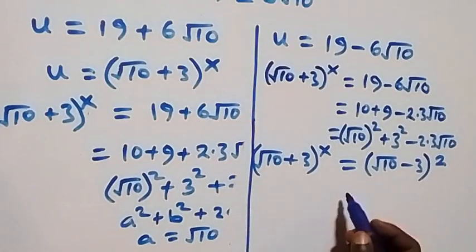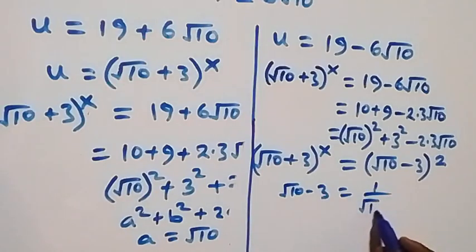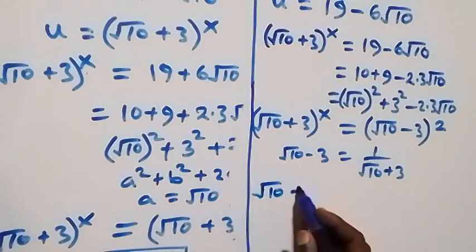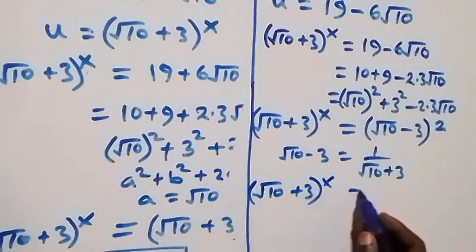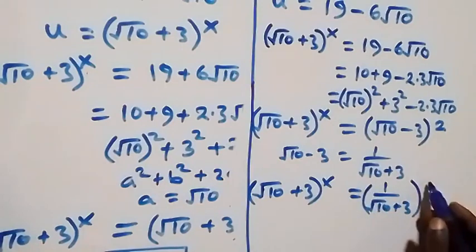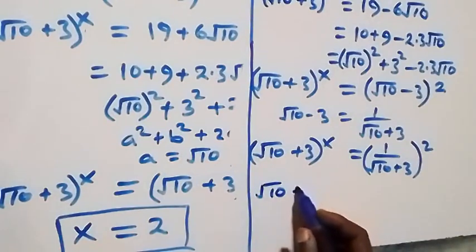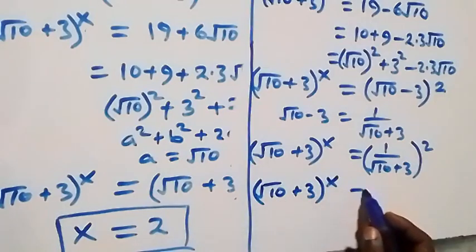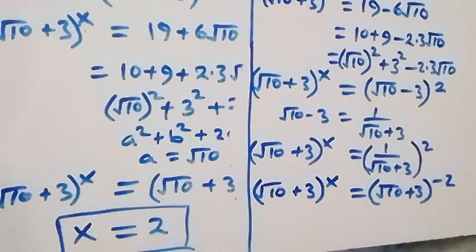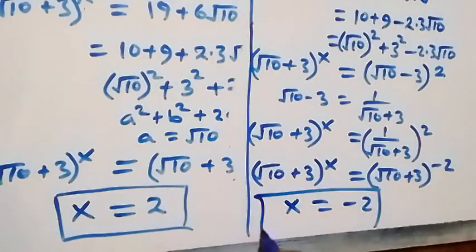Recalling that √10 - 3 equals 1 over (√10 + 3), we have (√10 + 3)^x equals 1/(√10 + 3)², which equals (√10 + 3)^(-2), since 1 over means raised to power minus 1.